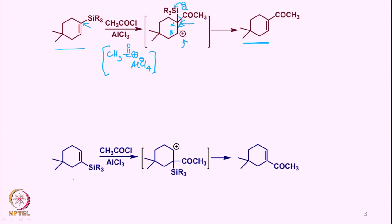In a similar fashion, if we take another vinylsilane of a different configuration and expect that the attachment of the electrophile occurs onto the same carbon as the silicon-holding carbon, then we can get the product as shown here.